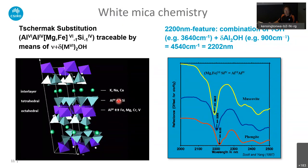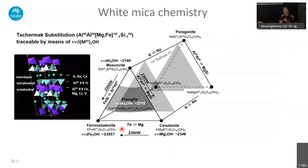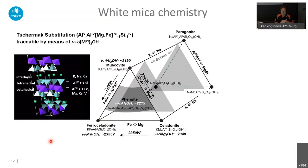In the Tschermak exchange, we're replacing the octahedrally coordinated aluminum in the muscovite by iron or magnesium — but we could also replace it with chromium, vanadium, or any other element that fits the octahedral site. It's a coupled exchange, so with the aluminum replacement by iron-magnesium, we also need to replace aluminum by silica on the tetrahedral site. One more slide on this topic: a few weeks ago some papers were released about the Kalgoorlie Superpit, mentioning paragonite — a sodic mica.